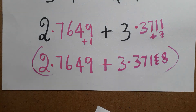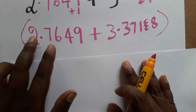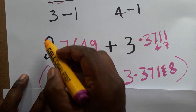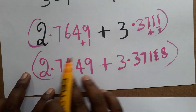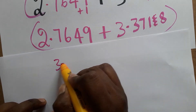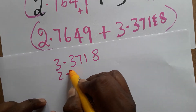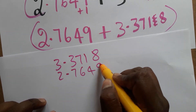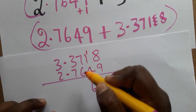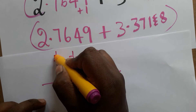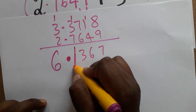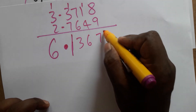Now we have to add these two log values. After addition we take the antilog to get the final multiplication result. Adding 3.37118 and 2.7649: the sum is 6.1361 — I got 6.1367.